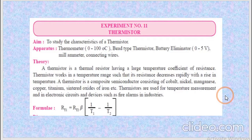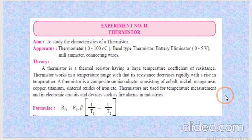What is thermistor exactly? It is a thermal resistor having a large temperature coefficient of resistance. It is a thermally sensitive resistance semiconductor device. A small change in its temperature causes a large change in its resistance. That's why it is called thermal resistor or thermistor.